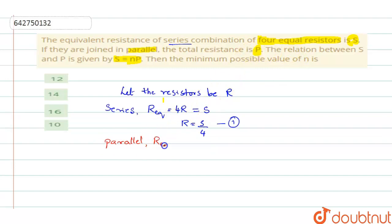So let us say, in this case, if you are taking R equivalent, when 4 are connected in parallel, it becomes R by 4. And R by 4, the value they are telling it as P.